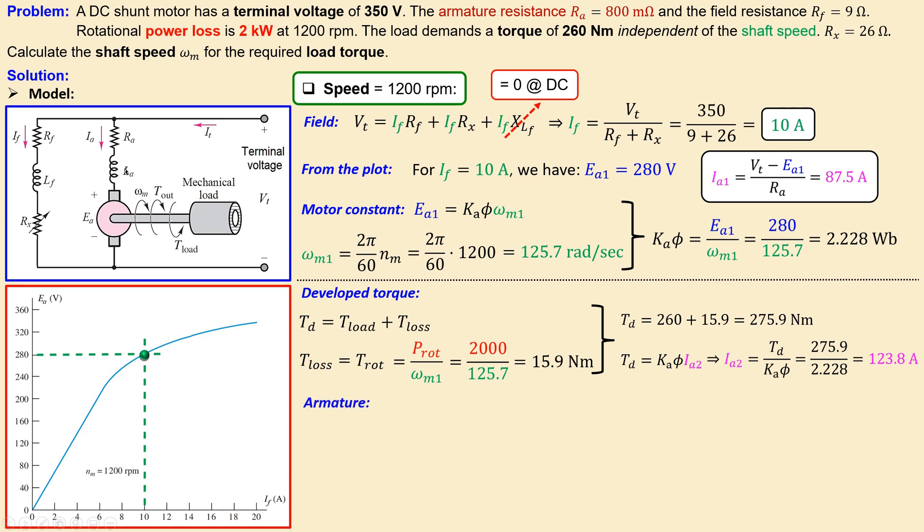Let's now look at the armature branch again and set up the equation. This is of course the equation we have. Again we lose this because the inductance will be zero for DC. We set up the equation using 350 volts for our terminal voltage. This is the back EMF we need to calculate for the new situation. We have the new armature current and also the 0.8 already given in the example. The back EMF now calculated for this condition is 251 volts.